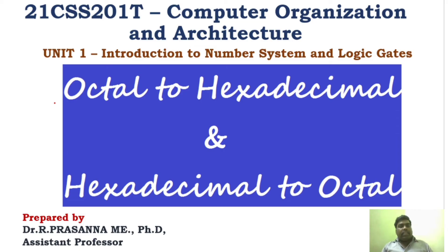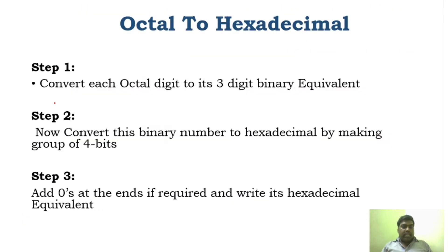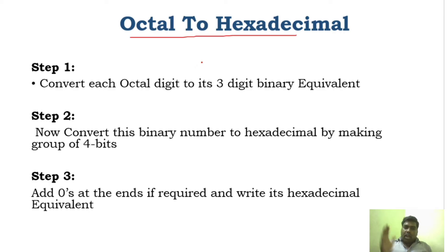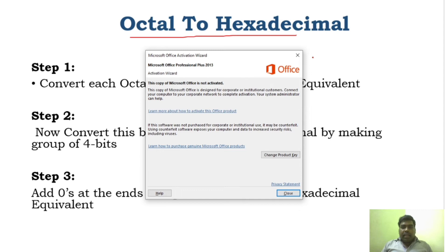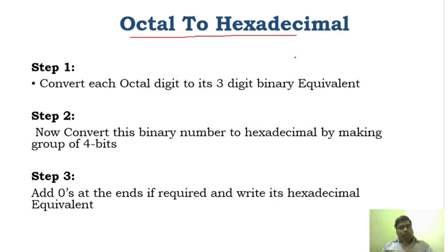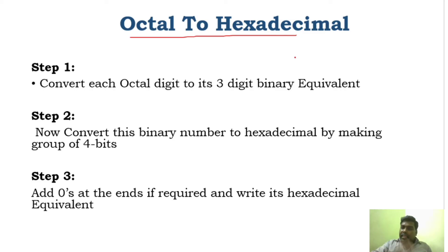Today we will start with octal to hexadecimal conversion, and first we will see the rules and regulations for octal to hexadecimal. We have converted the octal digits directly to binary, and similarly we have converted hexadecimal directly to binary. For octal to hexadecimal, what we have to do is convert the octal number to binary, and then convert from binary to hexadecimal.